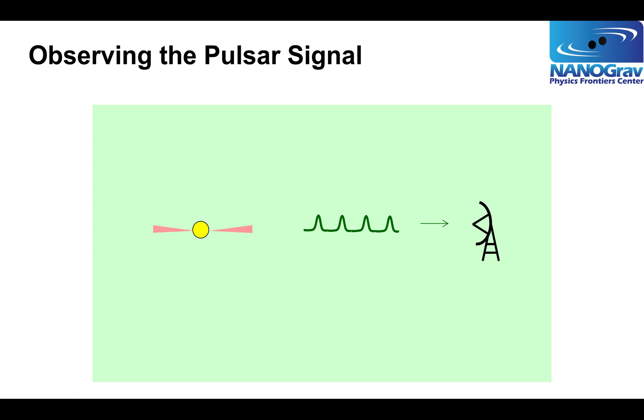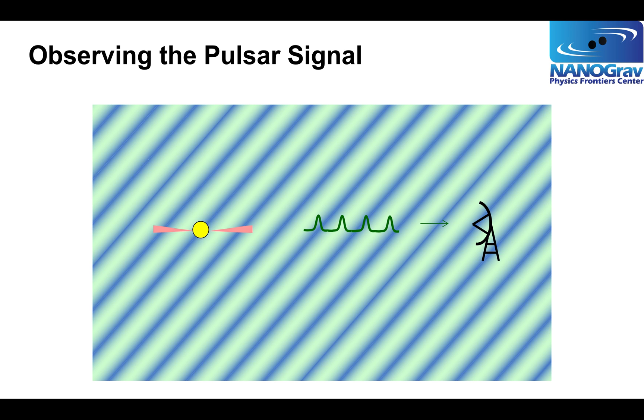The fundamental observable in our program is the pulse arrival time. A pulsar several thousand light years away emits pulses. They travel through space and eventually reach our telescope, where we measure the time at which they arrive. If there's a distant gravitational wave source, that's going to stretch and shrink the space between the pulsar and us, changing the proper distance and hence changing the time at which the pulse arrives. We hope to measure those perturbed arrival times and hence detect gravitational waves.